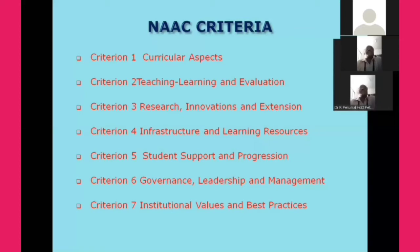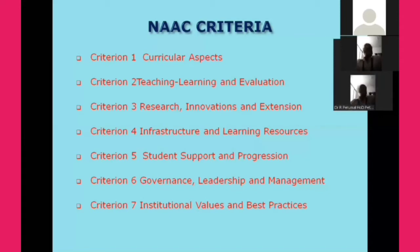Criteria 3 is Research, Innovations and Extension, covering resources for research, resource mobility, extension activities, awards and rewards for research, funded projects, funding received from various institutions, collaboration activities, and MOUs signed with other institutions and industry organizations. Criteria 4 deals with Infrastructure and Learning Resources, covering classroom infrastructure, building infrastructure, learning resources, library infrastructure, IT resources, and maintenance procedures.